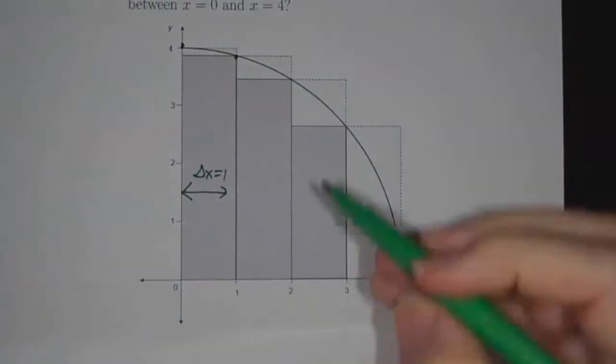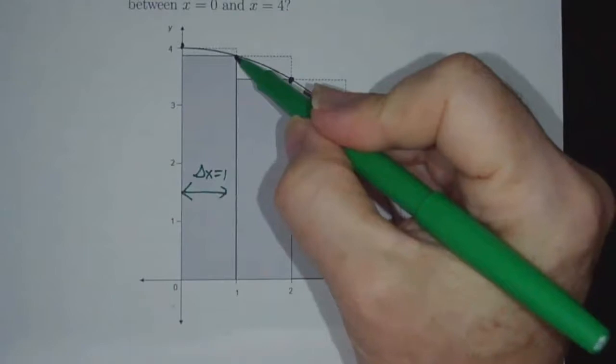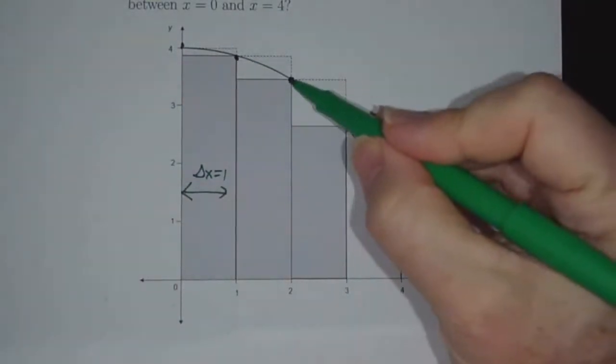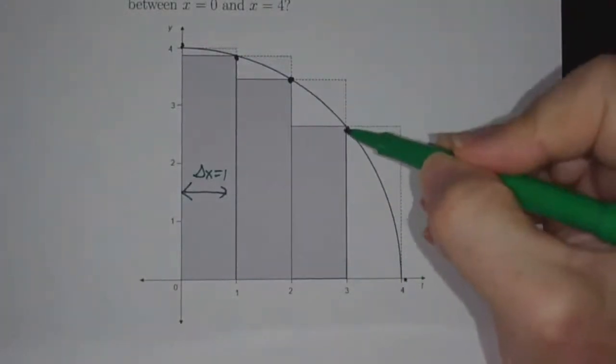In the second strip, everything is at least this high, and at most this high. In the third strip, it's at least this high, and at most this high. In the fourth strip, it's at least this high, and at most this high.